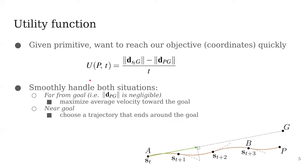We also use this utility function. Basically, this utility function smoothly handles both situations when it's far from the goal and near the goal. When it's far from the goal, the planner maximizes the average velocity toward the goal. When it's near the goal, the planner chooses a trajectory that ends around the goal, as seen in this figure.